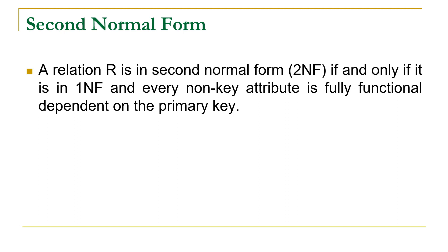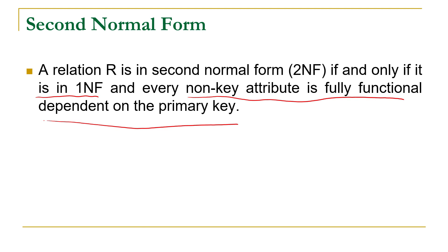From this definition we can clearly see that there are two requirements for a relation to be in second normal form. First, it should be in first normal form, and second, every non-key attribute should be fully functional dependent on the primary key.